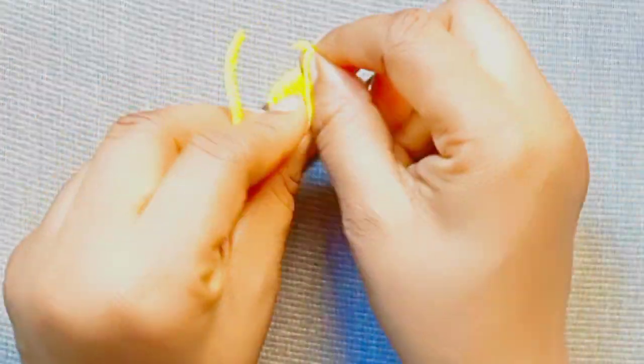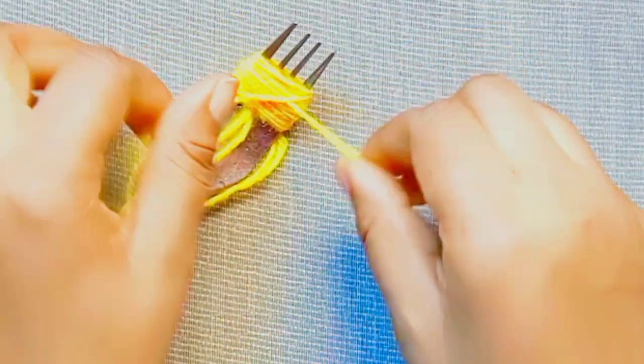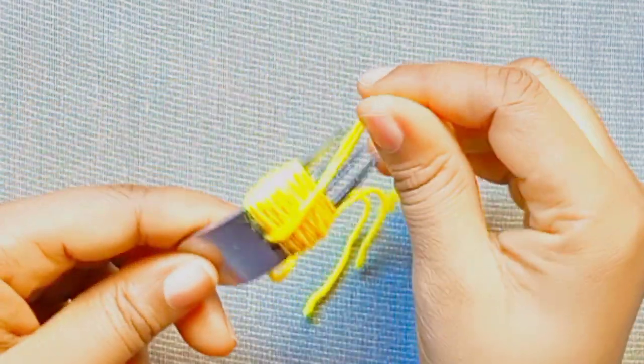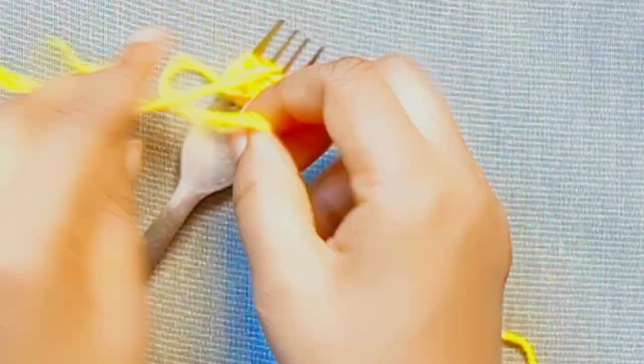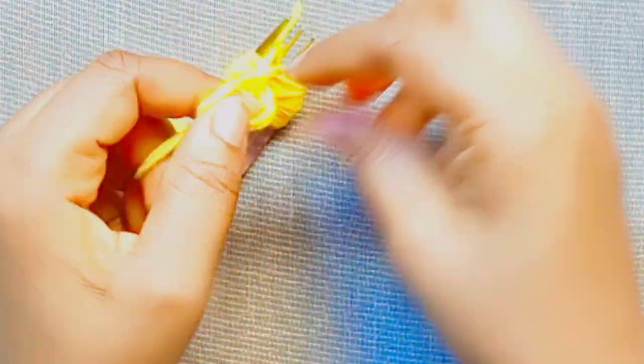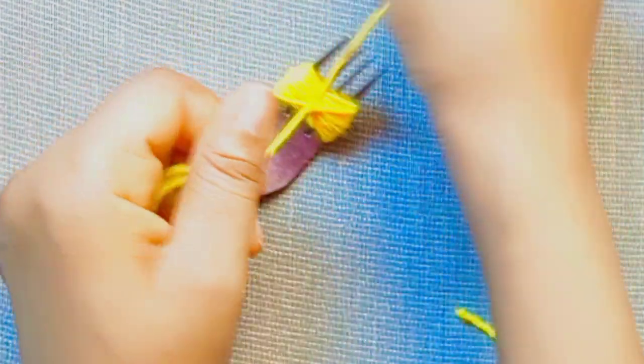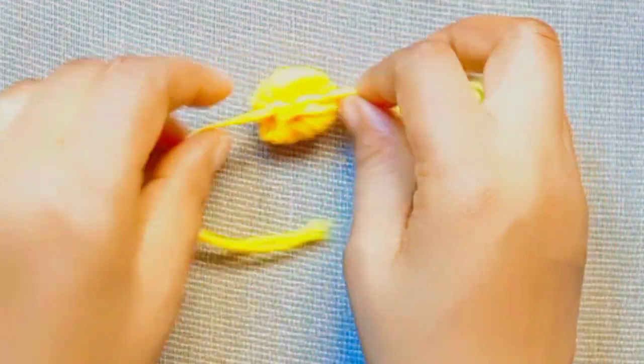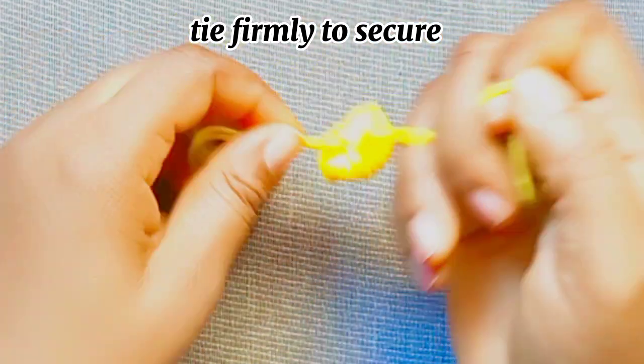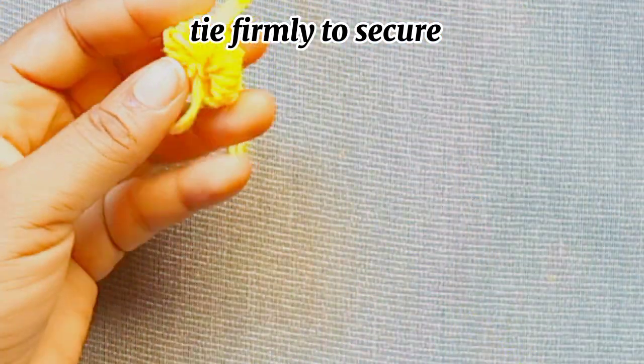Tie it to secure. Take the two strands of wool already at the middle of the fork, then tie firmly the woolen design and then cut open the circumference of the woolen design to make a pom-pom.